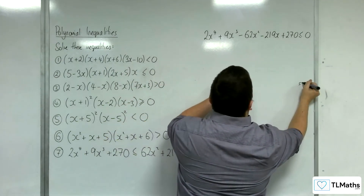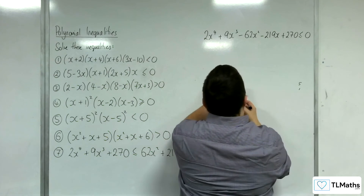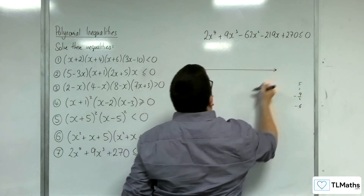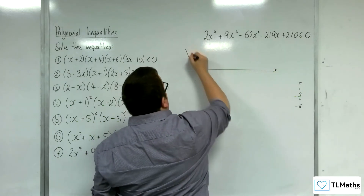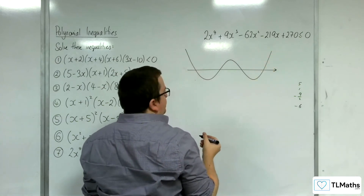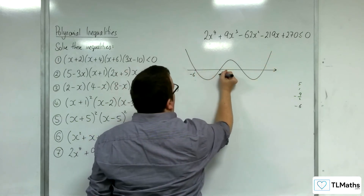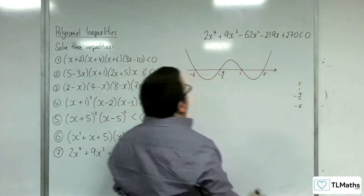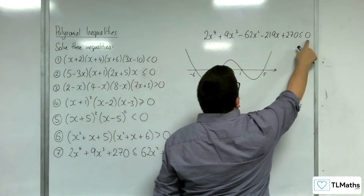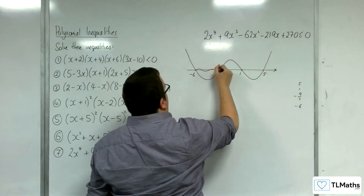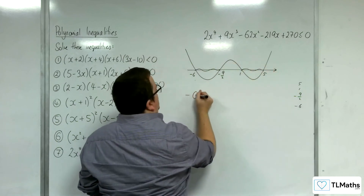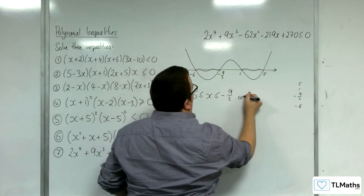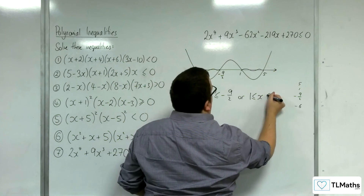The solver gives roots of 5, 1, minus 9 halves, and minus 6. It's a positive x to the 4, so ordering: minus 6, minus 9 halves, 1, and 5. Where is the graph below or equal to the x-axis? Two regions, two distinct inequalities: x is greater than or equal to minus 6 but less than or equal to minus 9 halves, or x is greater than or equal to 1 but less than or equal to 5.